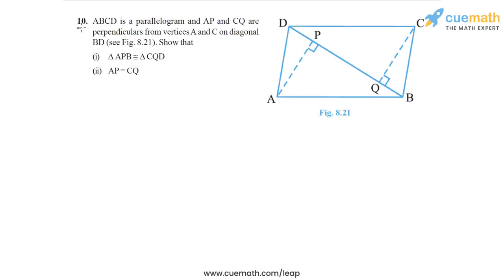The problem statement in question 10 says ABCD is a parallelogram, the one shown here in figure 8.21, and AP and CQ are perpendiculars from vertices A and C on the diagonal BD.